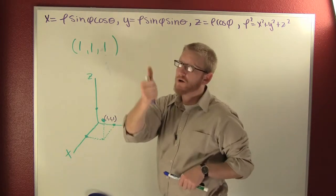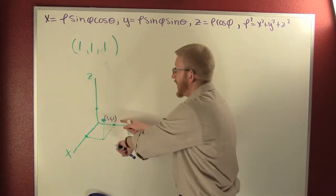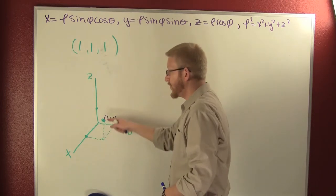Here we have our rectangular point: one, one, one. Yeah, I've graphed it for you. One on the x, one on the y, one on the z.